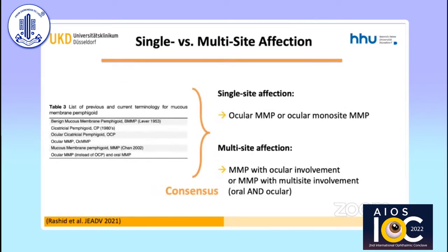In order to align the terminology, in the recently published S3 guideline, the following consensus was reached. As the disease in single-site affection may have different characteristics from cases with multi-site involvement, single-site terms such as ocular MMP or ocular monosite MMP should be used in patients with involvement of only one specific mucosal site, in this case the eye. In MMP patients with several affected mucosal sites, involvement of one site can be highlighted, for example as MMP with ocular involvement.